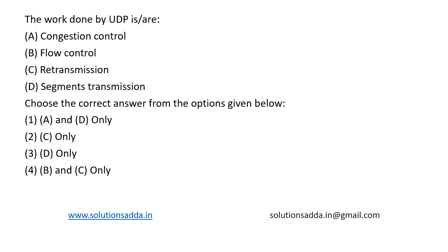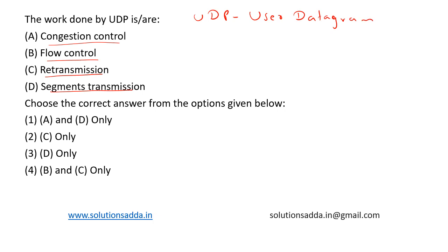This is a question from computer networks. The question asks what work is done by UDP: congestion control, flow control, re-transmission, or segment transmission. UDP stands for User Datagram Protocol. It is a transport layer protocol, and unlike TCP, that is Transmission Control Protocol,